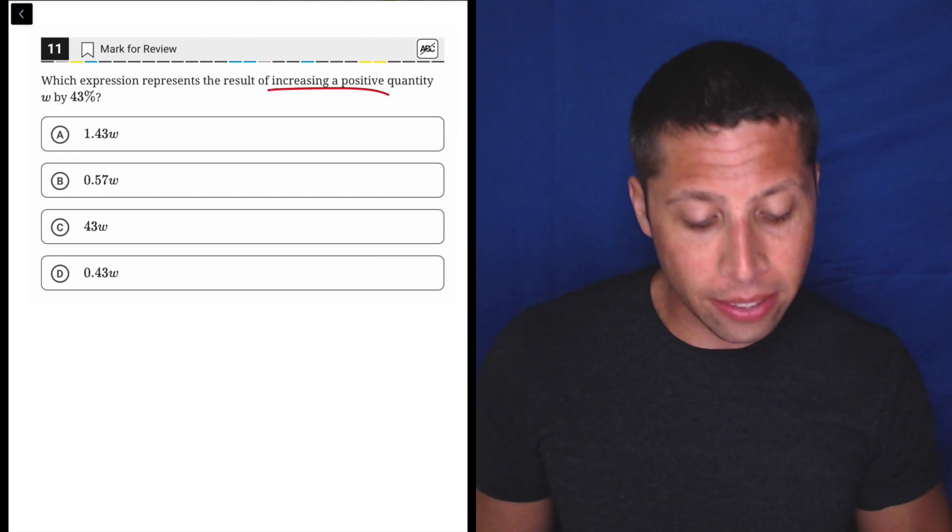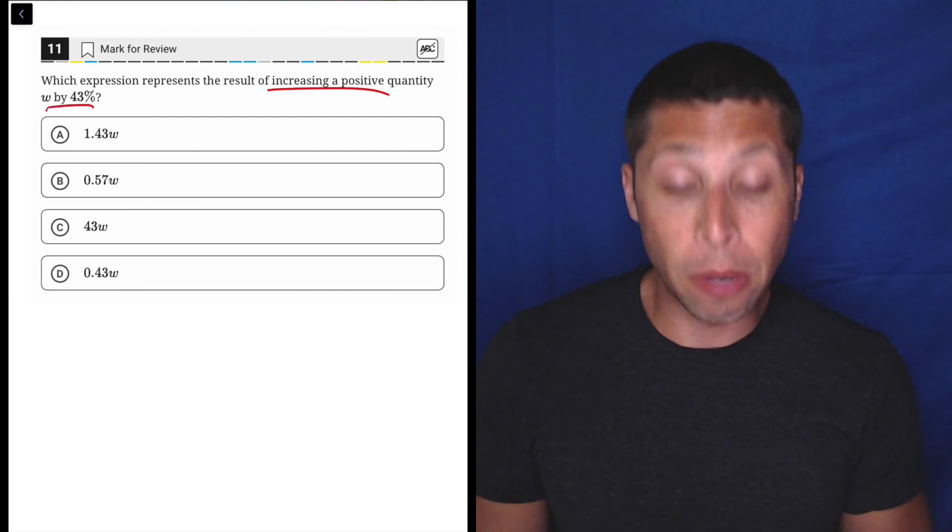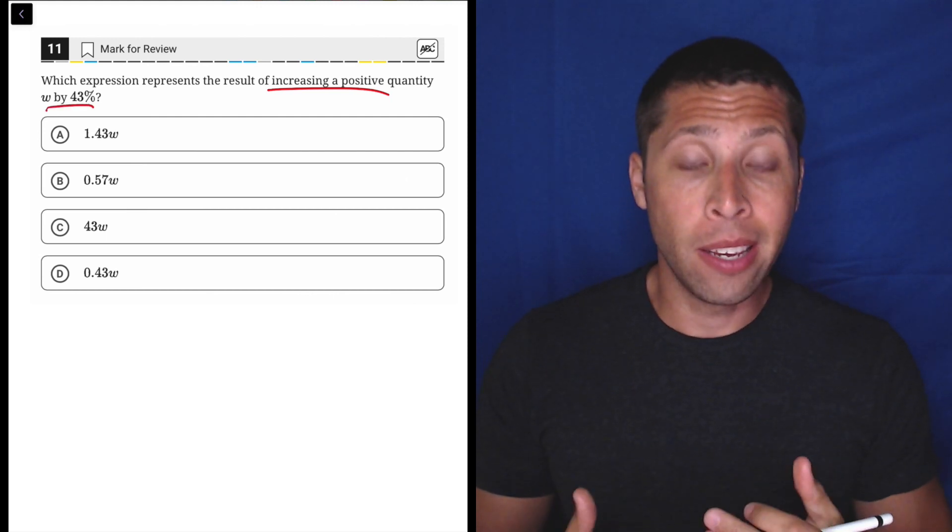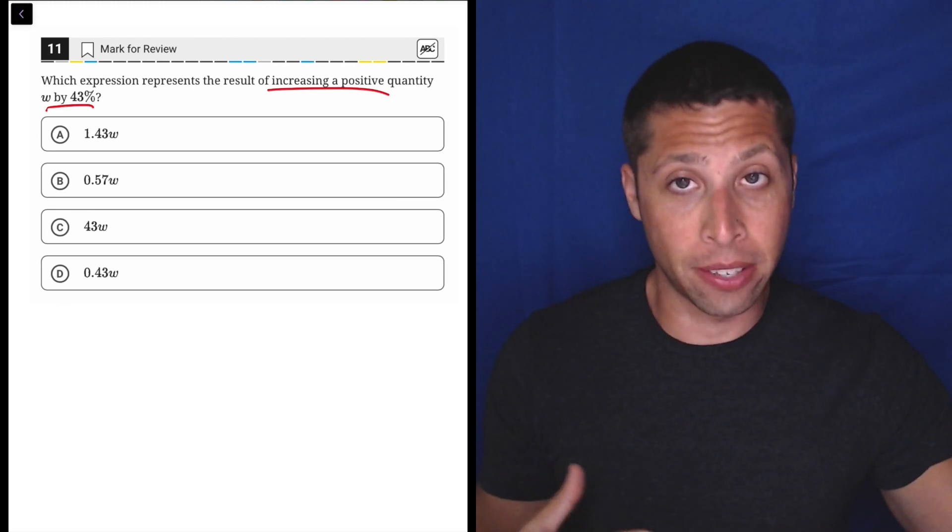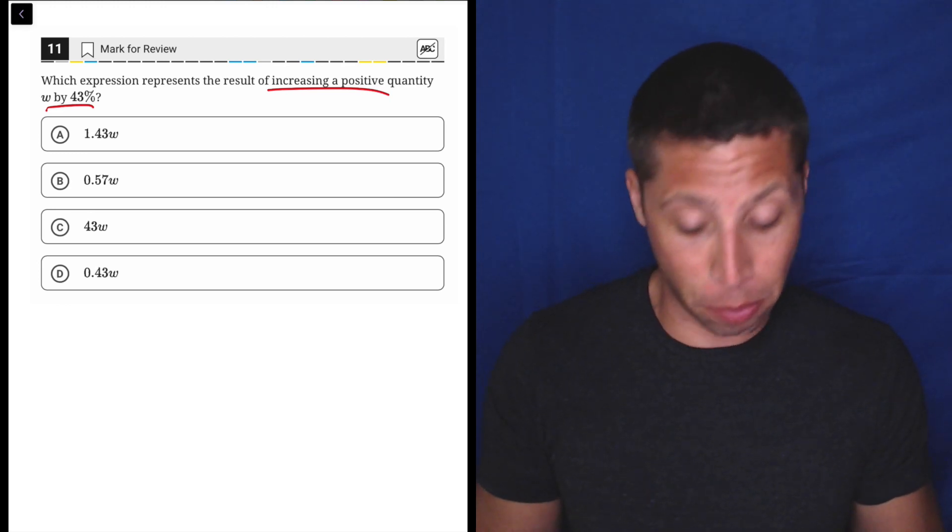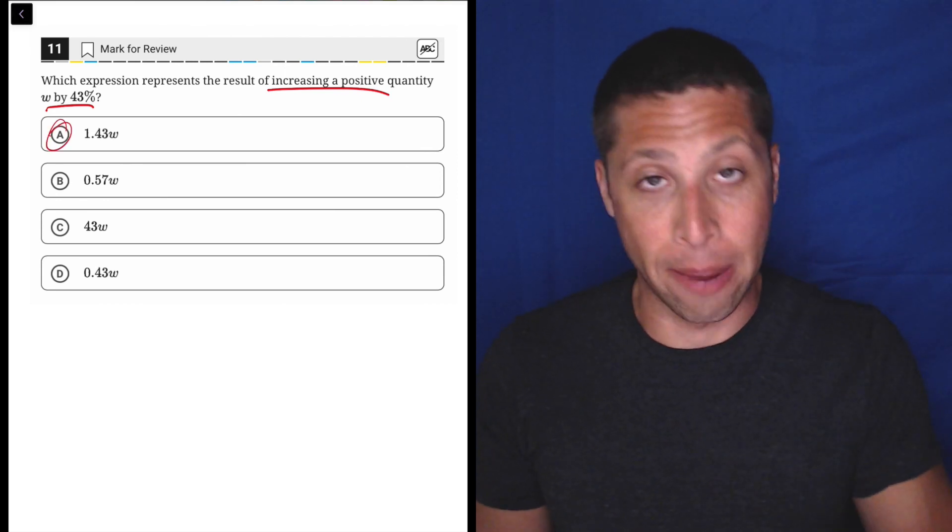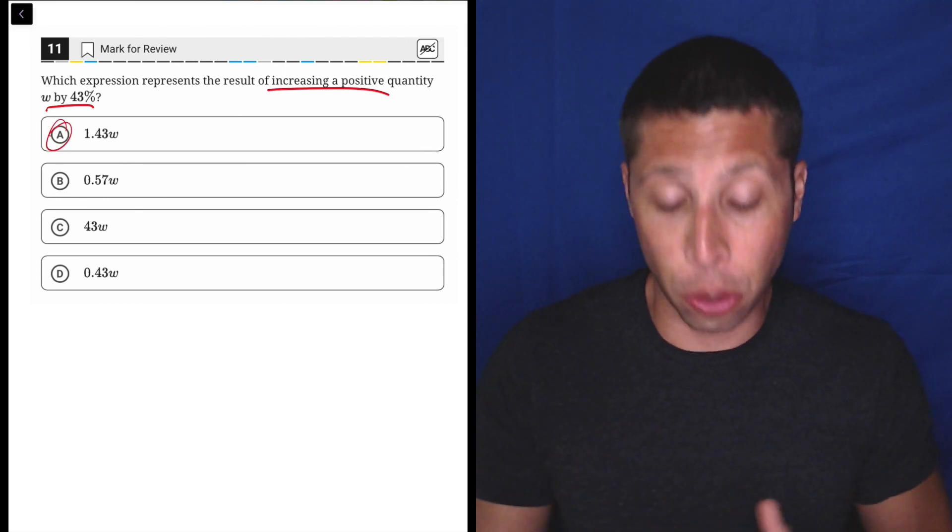If you are increasing something by 43%, it's going to be 100% of what we had, 100% of W, plus another 43%, which ends up being 143%, which is represented by choice A. So for many of you, that's just intuitive.